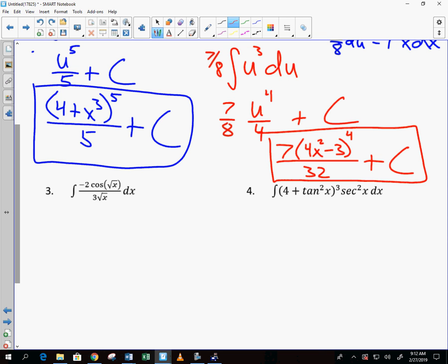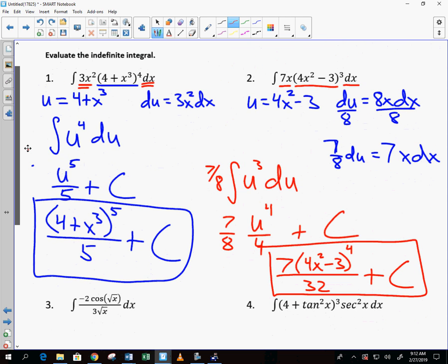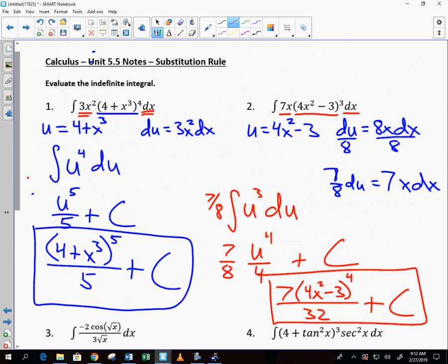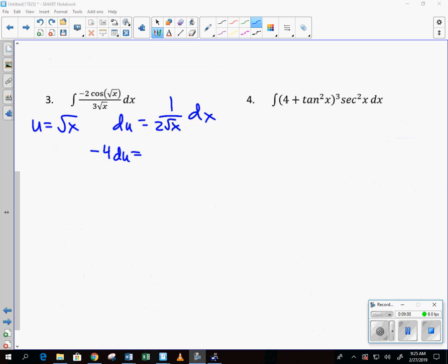So I end up with 7 times what is u? 4x squared minus 3 to the fourth power over what? 32 plus a constant. What does it mean that this is the antiderivative of that thing? Area under the curve. Or if I took the derivative of this, I should get this guy right here, right? Well, think about it. What's the derivative of the inside? 8x, right? If you get 8x and you multiply it here, you get 8 over 32 is 1 over 4, right? So you get 7 over 4. Drop the 4 down, the 4 is going to go away. See how you end up with the 7x out there? And sure enough, we have the 7x right here. That's your introduction. We need to practice.